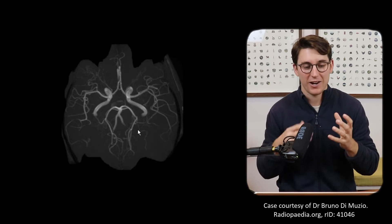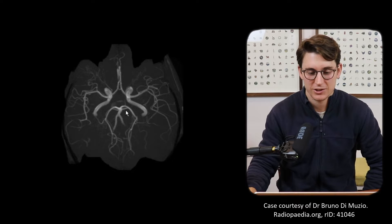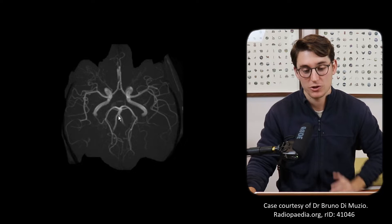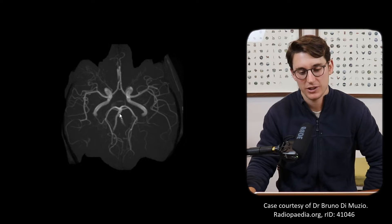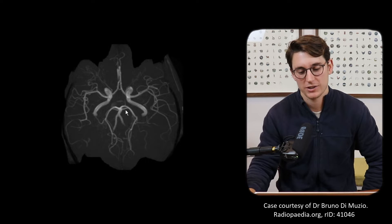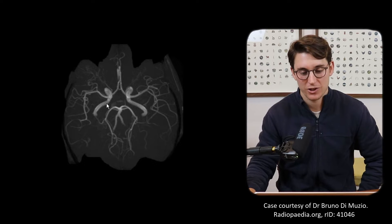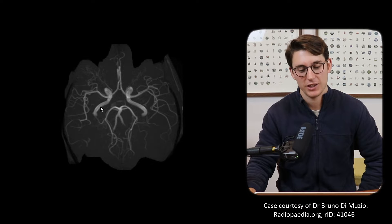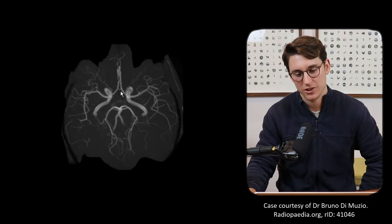Let's have a look at a 3D diagram. Here we have our MRA reconstructed into a 3D image. We can see the vertebral arteries posteriorly coming up to join and form the basilar artery, which bifurcates into our posterior cerebral arteries going towards the occipital lobe. For the anterior circulation, we can see the internal carotid bifurcating into our anterior cerebral and middle cerebral arteries coming off into the sylvian fissure, with a small anterior communicating artery there.